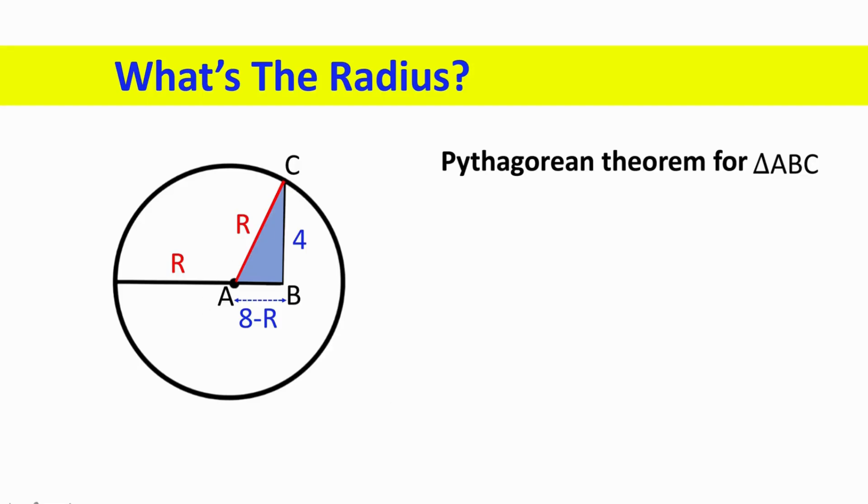According to the theorem, the square of AB plus the square of BC is equal to the square of AC. Here, AB is 8 minus R, BC is 4 units, and AC is the radius of the circle.